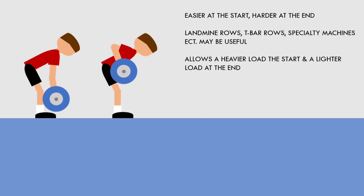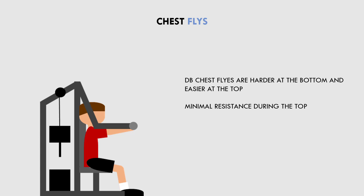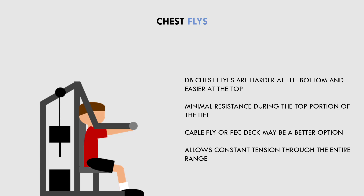Another example is the chest fly. A standard dumbbell chest fly is hardest at the bottom range and easiest at the top range. This isn't a huge issue because the chest is challenged in a stretched position, however apart from the bottom position the lift becomes quite easy at the top, because gravity only makes the weight challenging in a vertical position. So when trying to horizontally flex the shoulders to squeeze the pecs at the top of the lift, there is almost no resistance. Therefore, a cable fly or pec deck machine may be a better option, as these exercises allow high tension throughout the entire range of motion, including the end range.